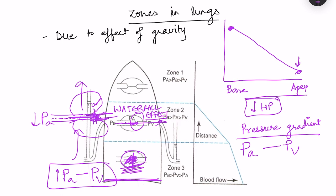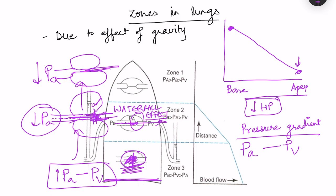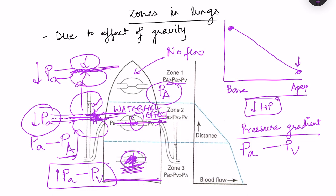Going even higher, pulmonary arterial pressure falls further due to gravity, and alveolar pressure becomes greater than intravascular pressure, causing the vessels to be fully compressed — there is no blood flow. So we have three zones: at the base (zone 3) blood flow is unobstructed; in the middle (zone 2) there is the waterfall effect with intermittent flow; and at the top (zone 1) there is no blood flow because pulmonary alveolar pressure exceeds pulmonary arterial pressure.